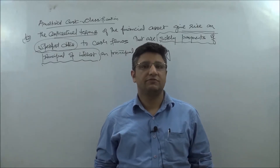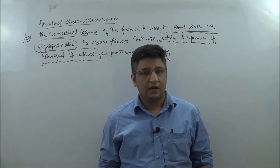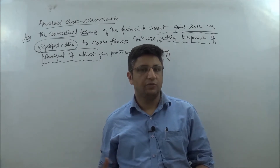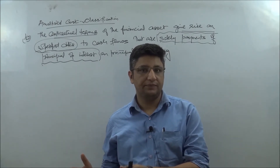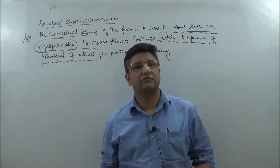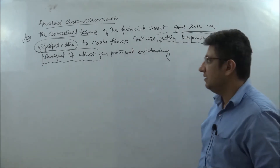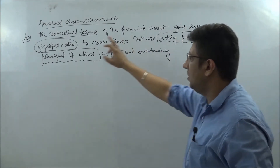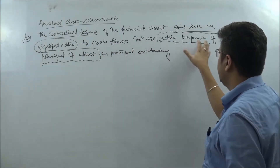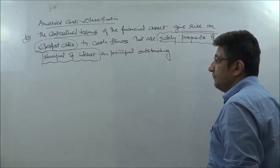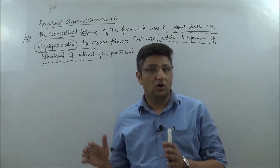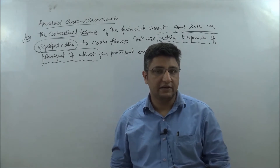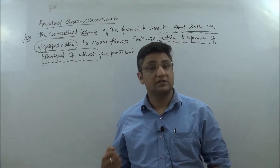Welcome once again to this discussion on financial instruments. What we have discussed so far is that to be able to use the amortized cost model we need to meet two conditions: the business model condition, and the second is looking at the recovery of contractual cash flows. The contractual terms of the financial asset give rise on specified dates to cash flows that are solely payments of principal and interest on the principal outstanding. This condition requires detailed deliberation to understand its implication.